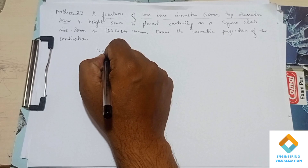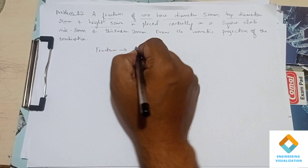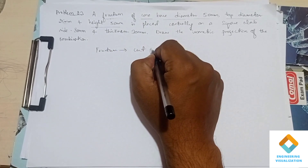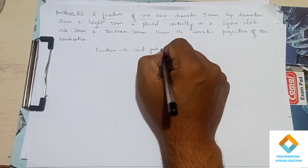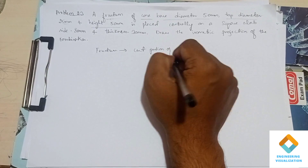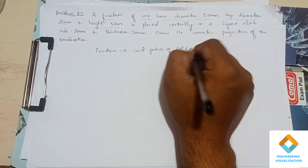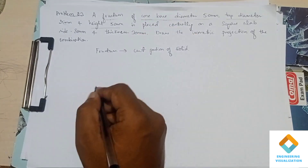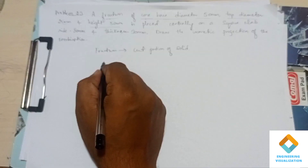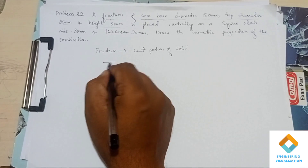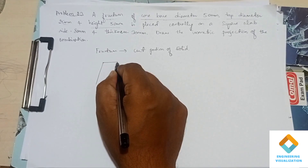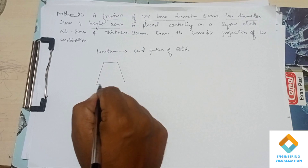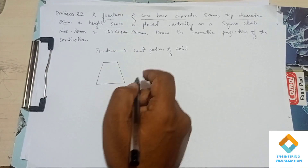First, let's understand what a frustum is. A frustum is nothing but the cut portion of a solid — cut to a particular height. Here we are looking at a frustum of cone, and I'll explain how it looks in the front view.